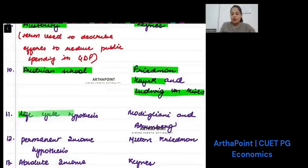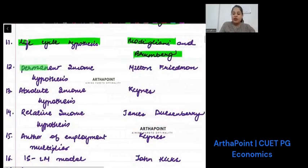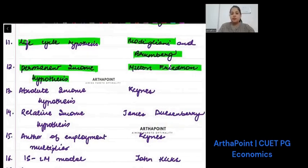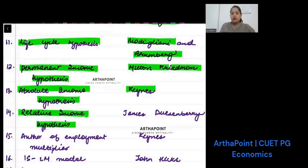Life cycle hypothesis was given by Modigliani and Bromberg. Permanent income hypothesis was given by Milton Friedman. Absolute income hypothesis was given by Keynes. Relative income hypothesis was given by James Duesenberry.